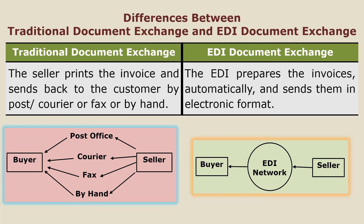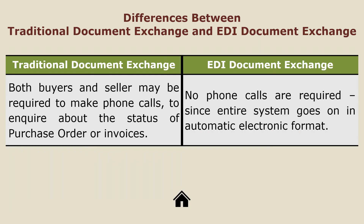To summarize the differences: in traditional document exchange, a purchase order must be printed and sent after purchase, and invoices must be printed and sent back to the buyer. In EDI, the moment a purchase is made, the information reaches the seller instantly, automatically, and paperlessly. Similarly, whenever an invoice is prepared, it reaches the buyer instantly, automatically, and in electronic format.